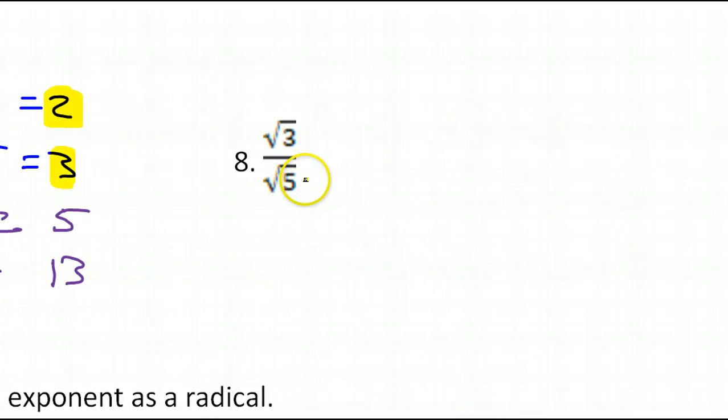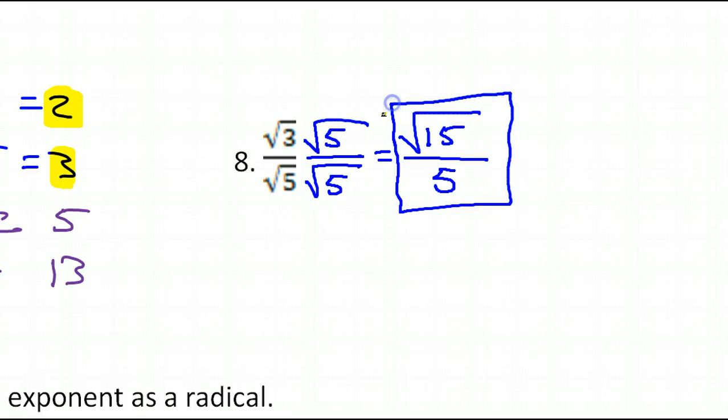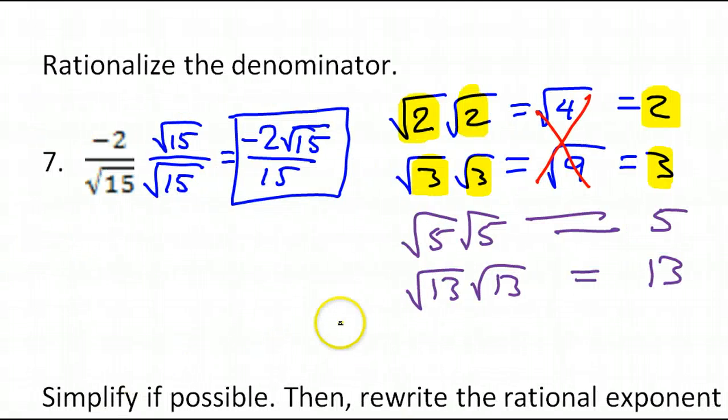Let's see. Number 8. Same type of thing. We need to get rid of the radical in the denominator. We can multiply radical 5 by itself, which is okay as long as I do the same thing in the numerator. So, radical 5 times radical 5 is 5. Radical 3 times radical 5 is radical 15. And there are no perfect squares that divide evenly into 15. So, this is the final answer. And again, you cannot simplify. You can't divide something that's in a radical and something that's not under the radical.